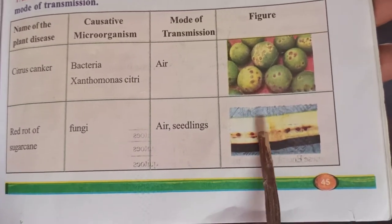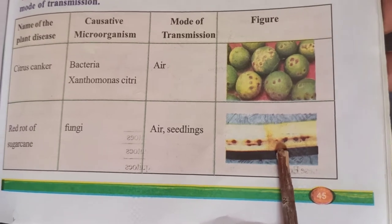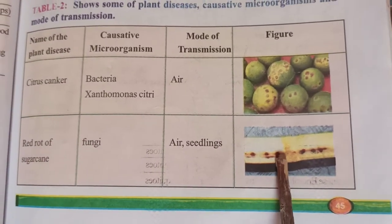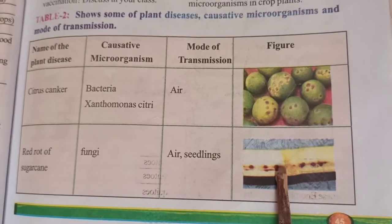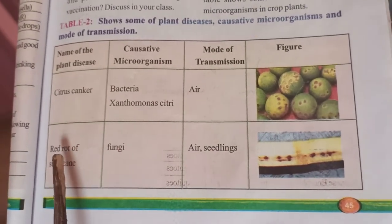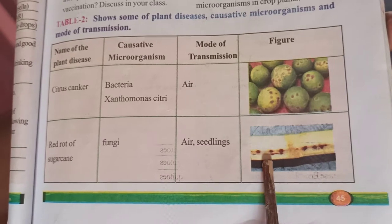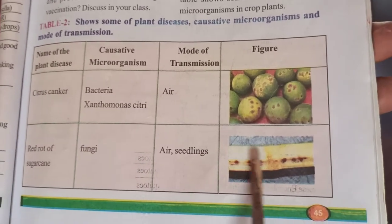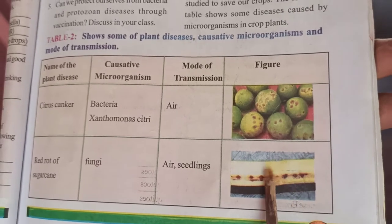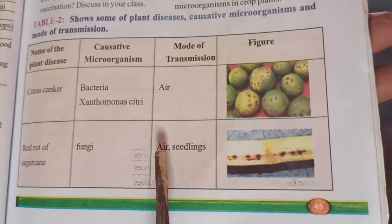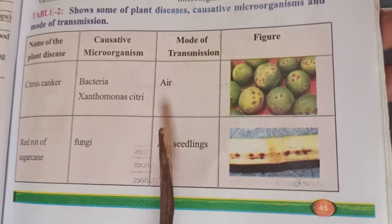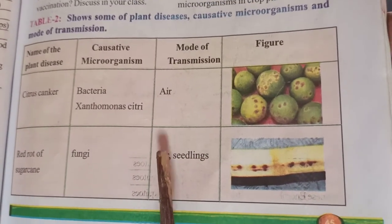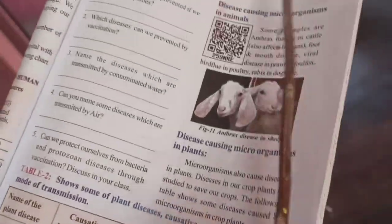The second plant disease is red rot disease in sugarcane, which gives a bad smell due to fungal infection. In the middle portion of sugarcane, we observe red stripes which give a foul smell. The mode of transmission is air and seedling — sometimes through the seed, sometimes through the air.